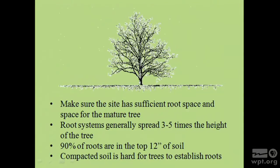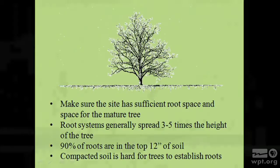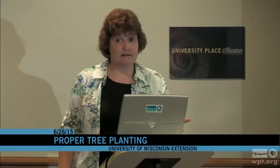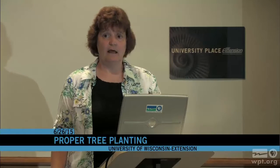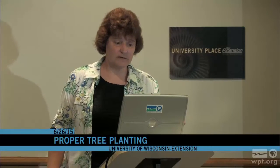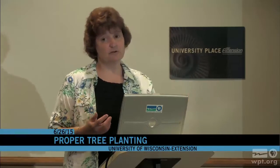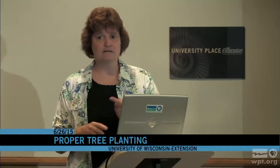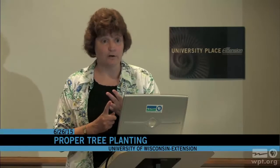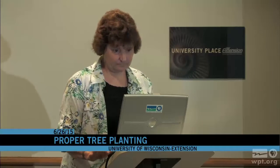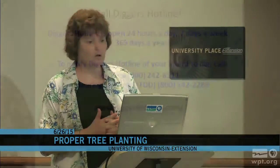Ninety percent of roots are in the top 12 inches of soil, so you don't want to compact that soil—for example, by parking vehicles under trees in rural areas. Compacted soil is very hard for roots to grow in because it doesn't have much oxygen. The reason tree roots grow in the top 12 inches is that's where the oxygen, nutrients, and water are. Don't forget to call Diggers Hotline—it's open 24 hours a day, seven days a week, and you can even use their website.